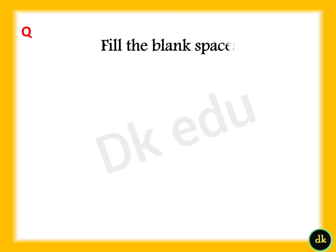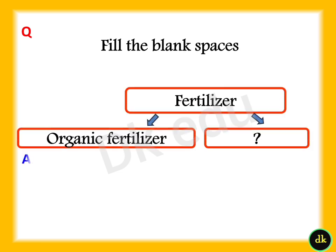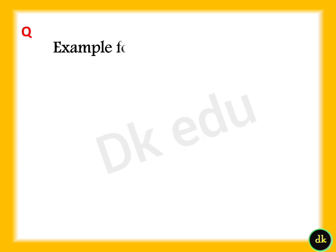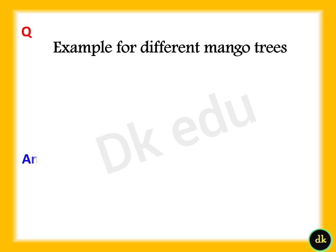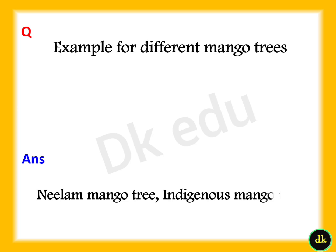Fill in the blank spaces. Answer: Chemical fertilizer. Example for different mango trees — Answer: Near mango tree and indigenous mango tree.